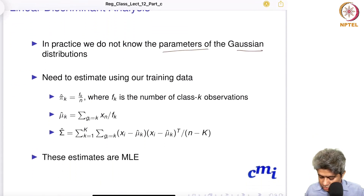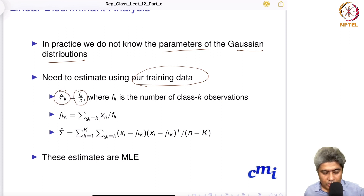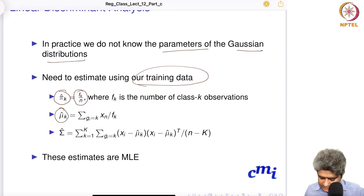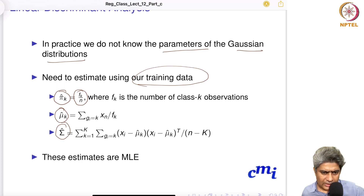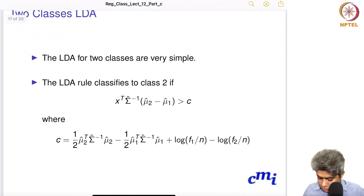In practice we do not know the parameters of the Gaussian distribution, so we estimate them from training data. Pi_k is estimated as the proportion of data points belonging to class k. Mu_k is the sample mean, and the covariance matrix is the sample covariance matrix. These estimates are all maximum likelihood estimates.